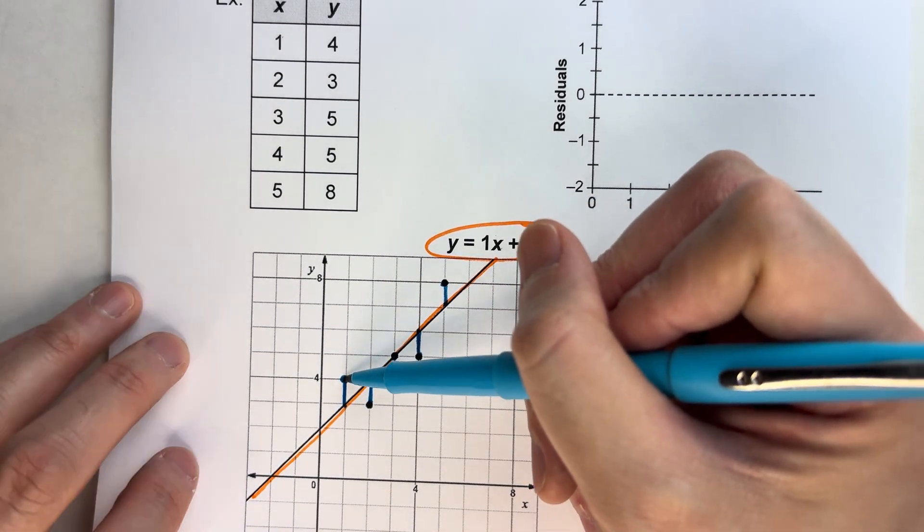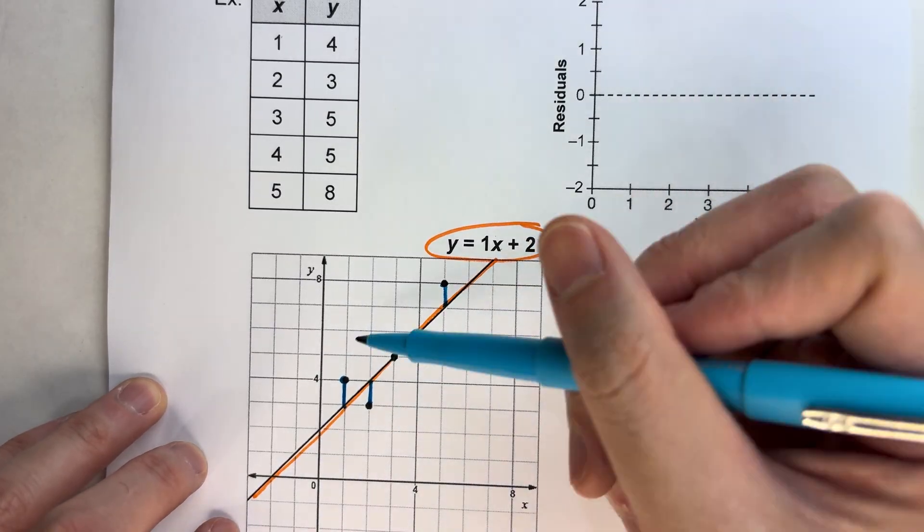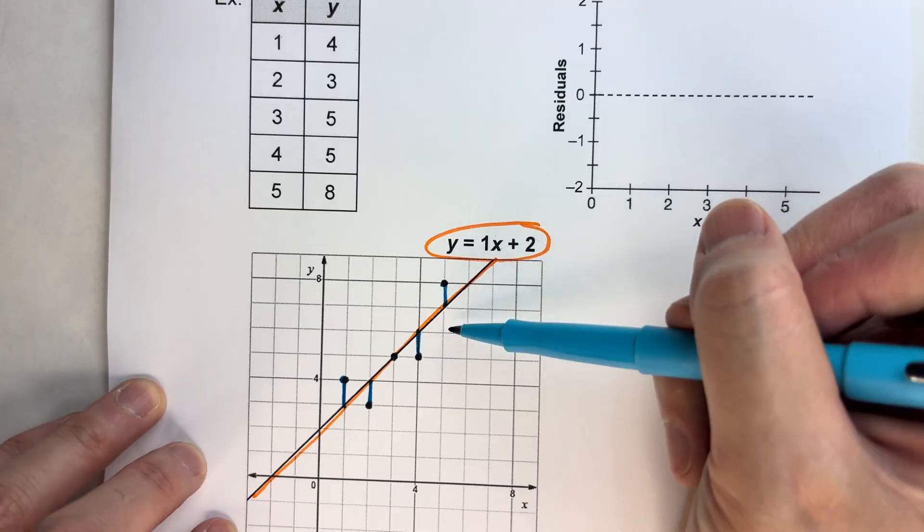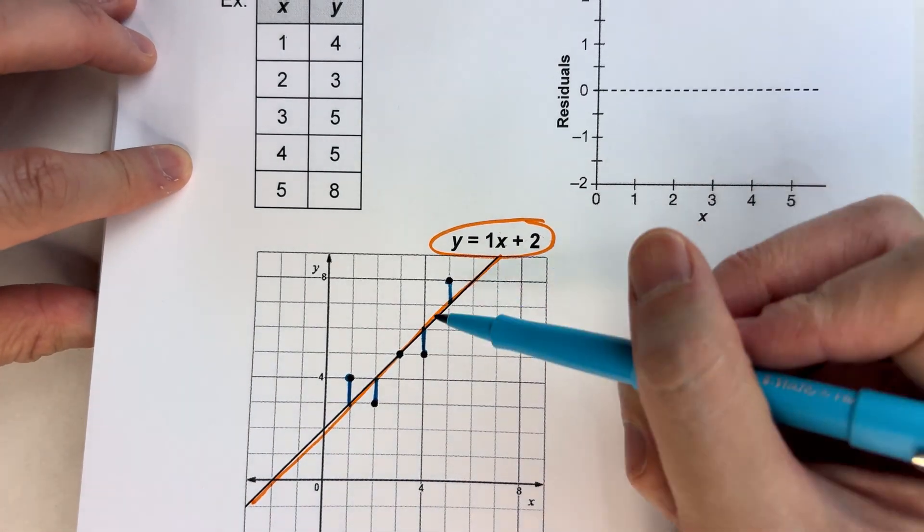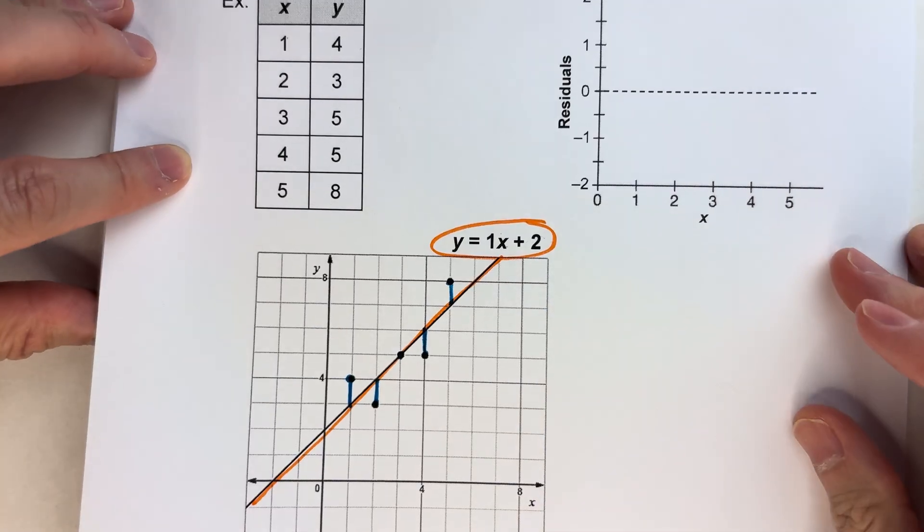So it's kind of a way to say, our data value is kind of close to the line. But how close? It's 1 above, 1 below, it's exactly on the line, it's below, it's above. So you can kind of see what we're doing. We're comparing how far it is from that actual line.